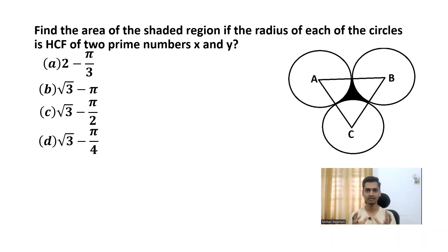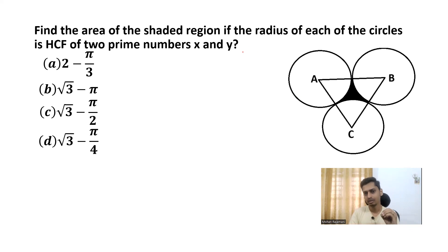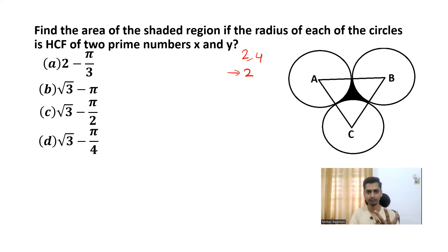We obviously know the HCF of two prime numbers is 1. I will show you a simple relationship between composite numbers and prime numbers. Let's take 2 and 4. What is the relationship between 2 and 4? Both numbers are divisible by 2, so 2 is the HCF of 2 and 4. But if you take prime numbers like 1 and 3, what is the relationship between them? Do you have something in common between 1 and 3? No.